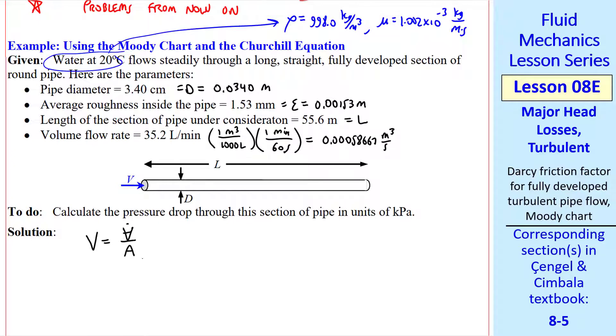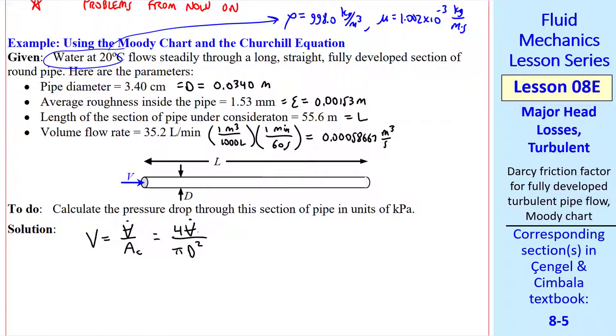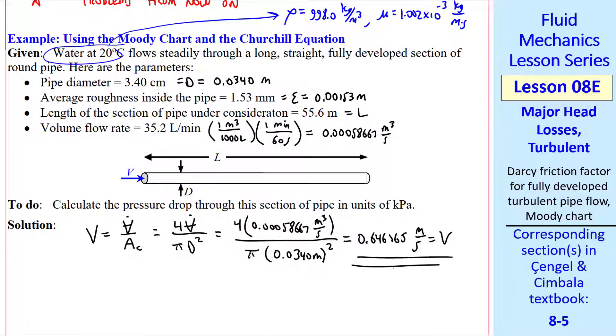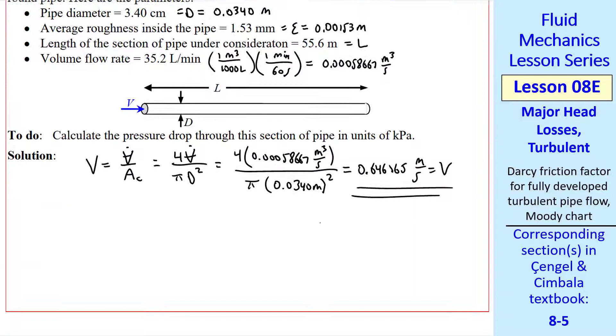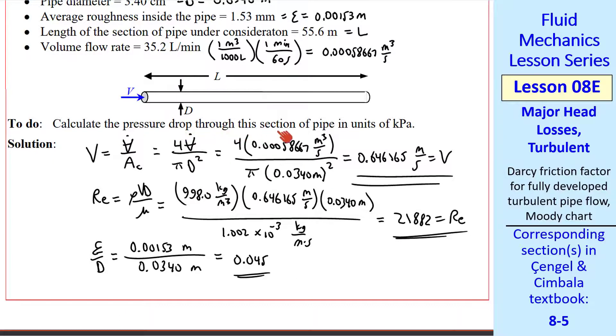So now we're ready to plug in these values. Average speed V is V dot over A. If you're using software like Matlab, make sure you have a different A. Call this maybe AC cross-sectional area. It's not the same as this A in the Churchill equation. I'll call it AC, which is pi d squared over 4, and so my speed becomes 4 times V dot over pi d squared, or about 0.646 meters per second. Now I can calculate Reynolds number rho V d over mu, or 21,882, and epsilon over d is also easily calculated. Here it's 0.045. We want to calculate the pressure drop through this section of pipe, but first we need to find F.